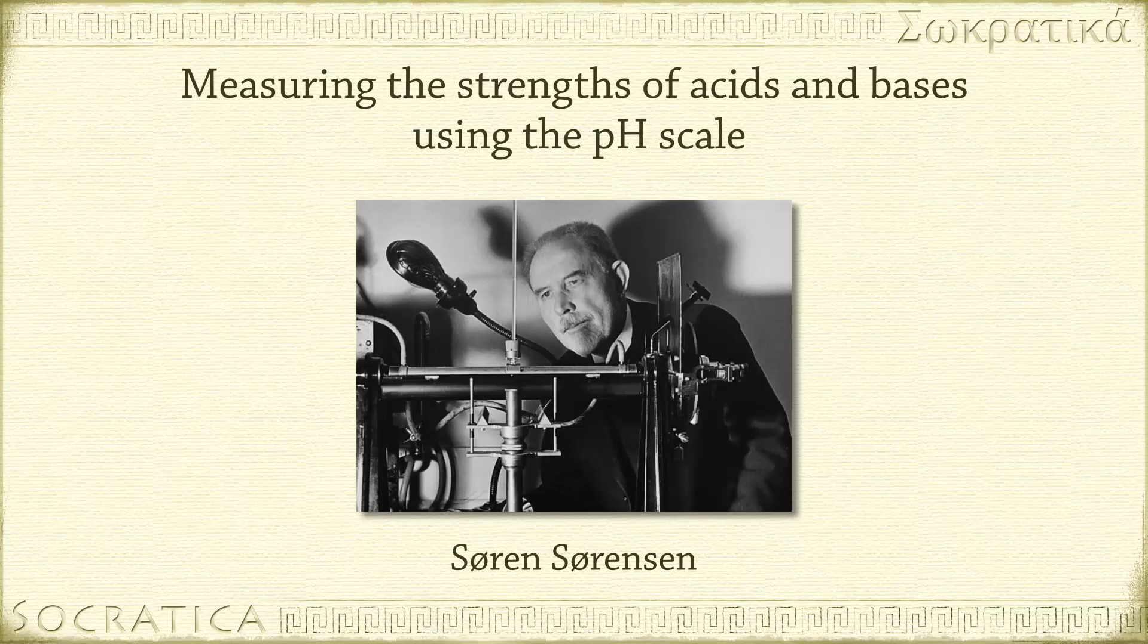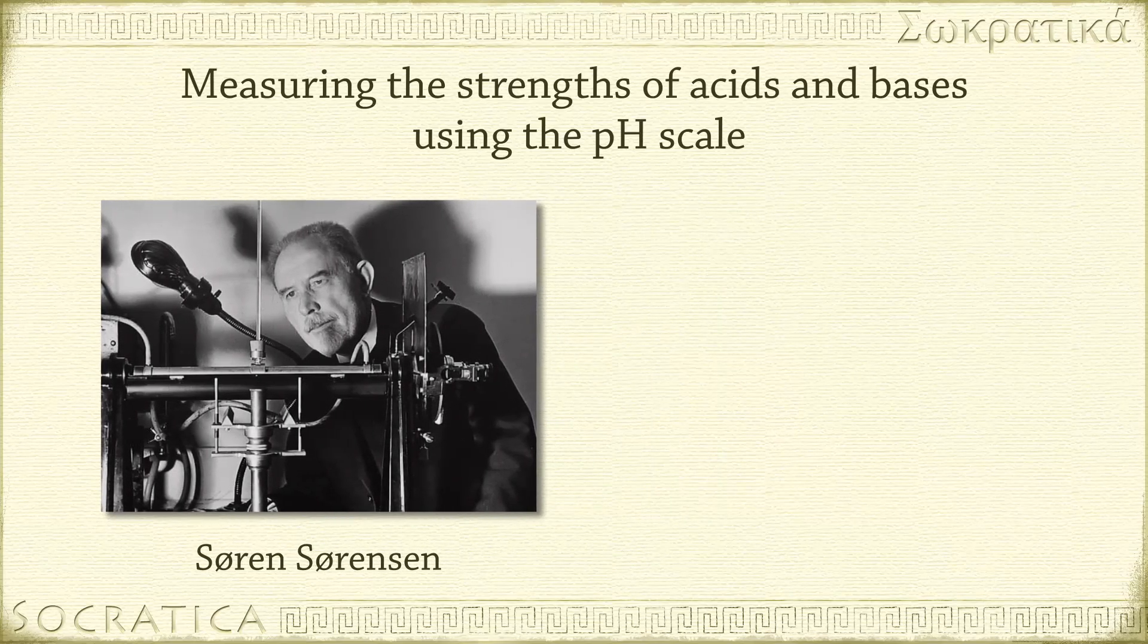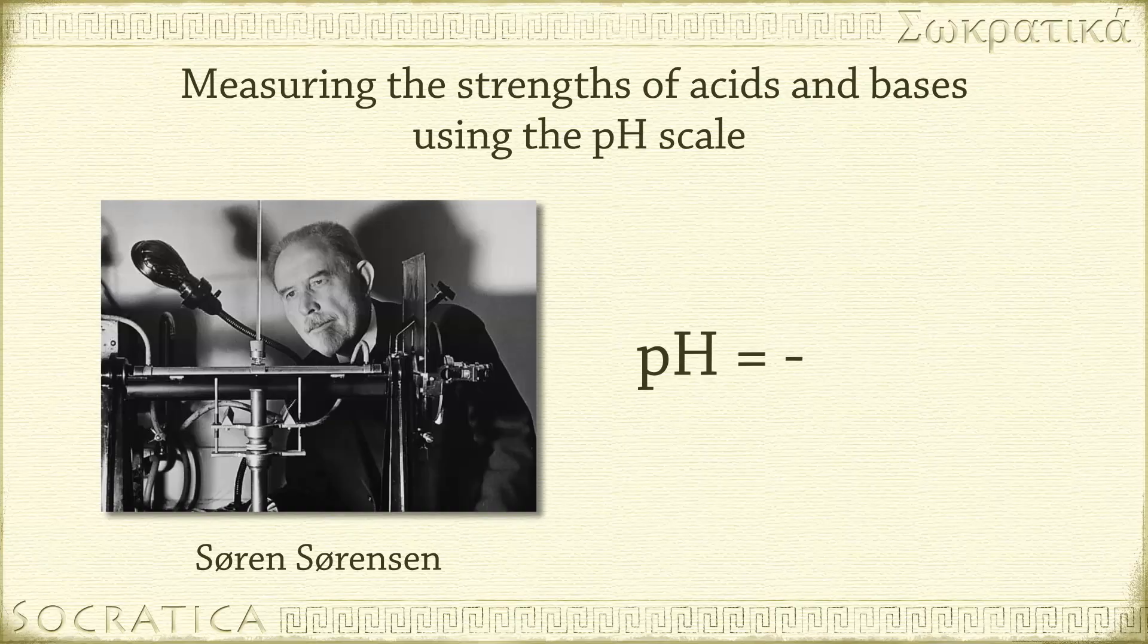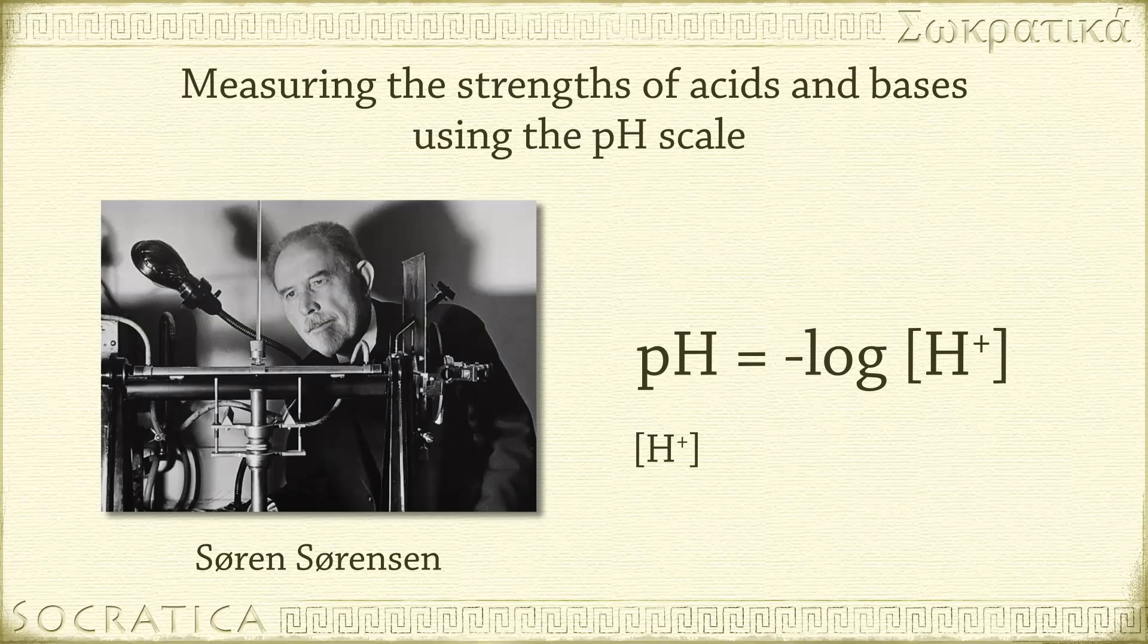It is a logarithmic scale that makes it easier to write the very small amounts of H+ ions that are produced by acids and bases. The equation is pH equals negative log of the concentration of H+ ions. The concentration of H+ is in terms of moles per liter.